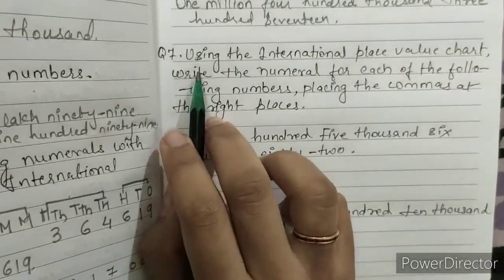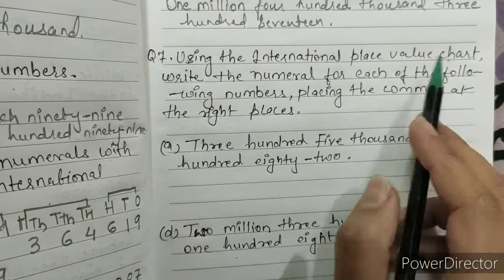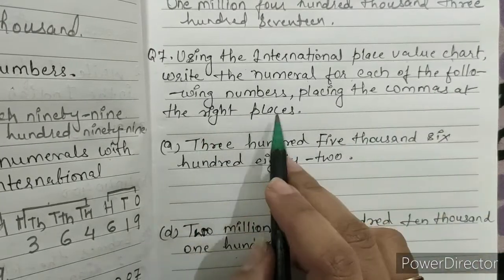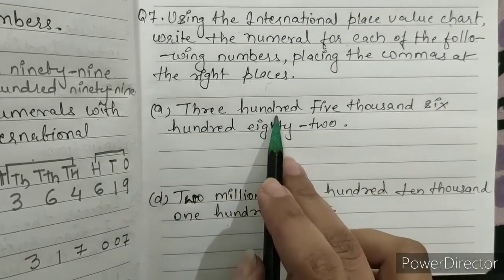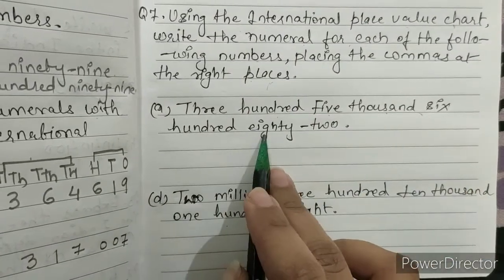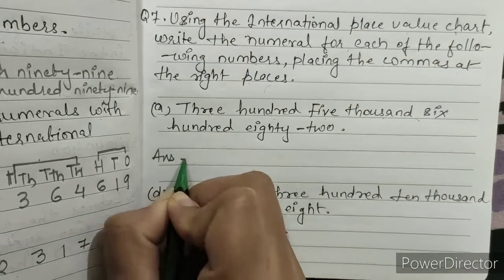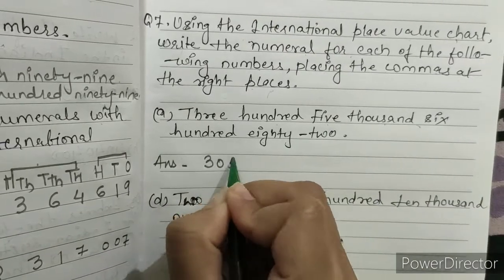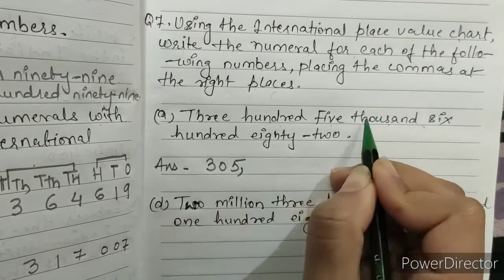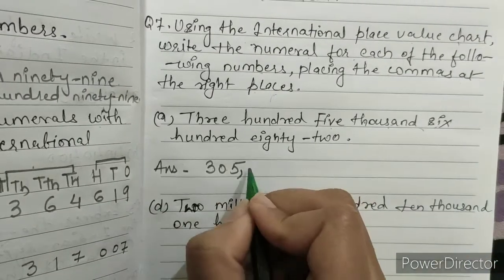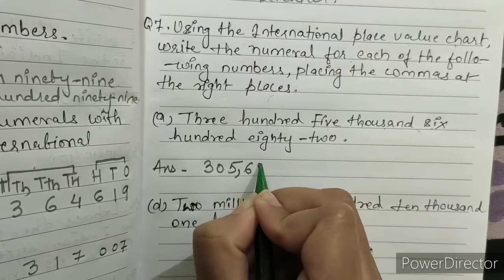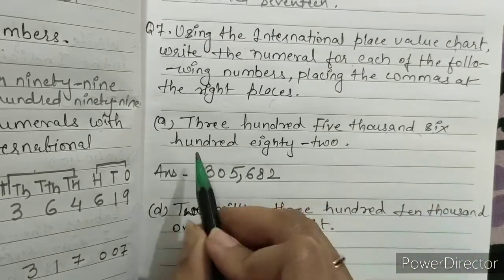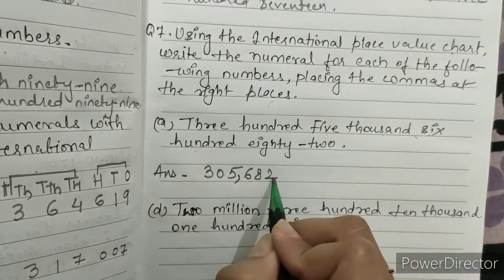Question number 7: using the international place value chart, write the numeral for each of the following numbers, placing the commas at the right places. Part a) three hundred five thousand six hundred eighty-two. The answer is 305,682. Because the thousands group is 305 and the ones group is 682, we write 305,682. This is our answer.